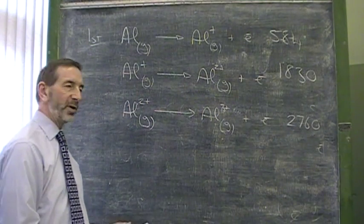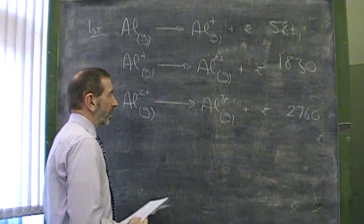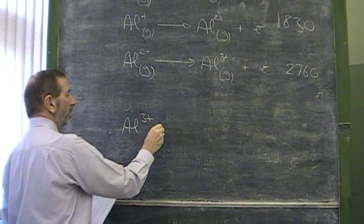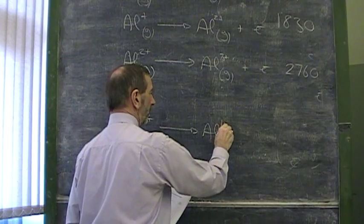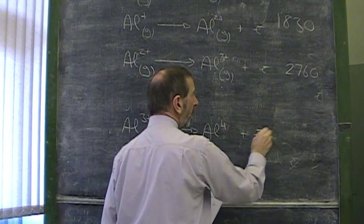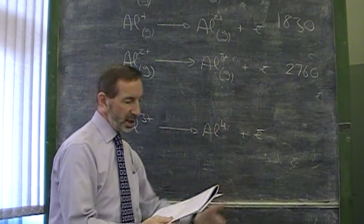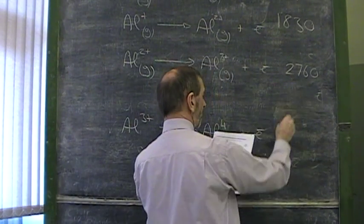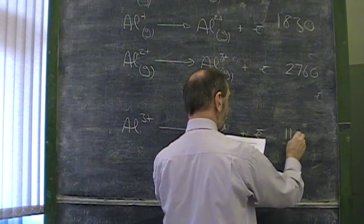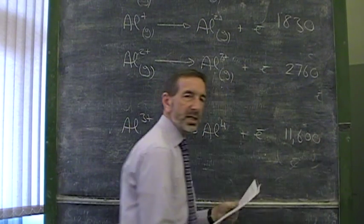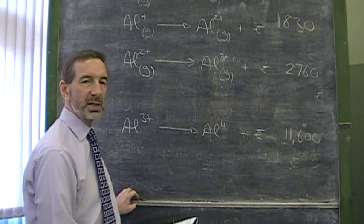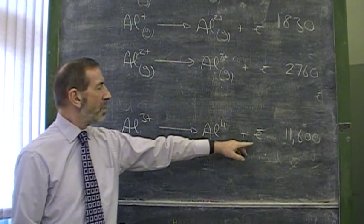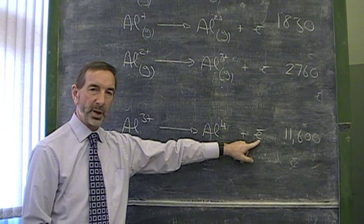What would happen if we try to remove yet another electron? Let's have a look. If we go from aluminium 3+ to aluminium 4+, removing just one more electron, we might have expected a fairly steady increase. But we discover now the value has rocketed from 2,000 to over 11,000. Why the sudden massive increase in ionization energy?